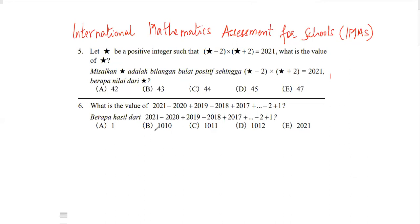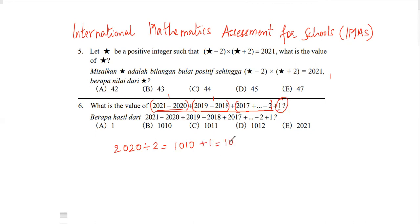Question 6: What is the value of this whole series? Pairing terms: 2021 minus 2020 equals 1, 2019 minus 2018 equals 1, and so on. The number of terms is 2020, and since we make pairs of 2, we divide by 2 to get 1010 pairs. The term 1 is left alone, so we add it. The total is 1011. My answer is option C.